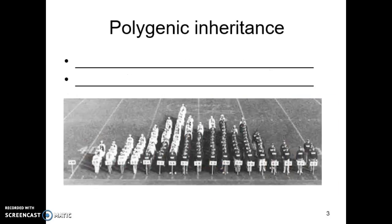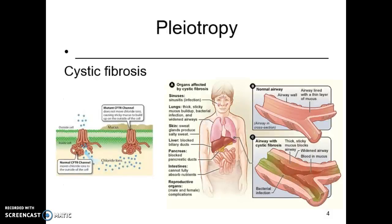Polygenic inheritance was one of the extensions — make sure you guys are comfortable with what that is. There's a big hint for you here. Pleiotropic examples — what is that, what happens, how does pleiotropy occur? Those types of things.